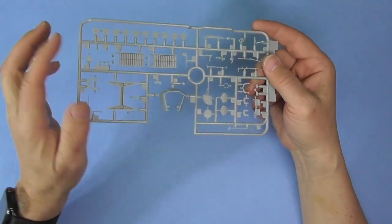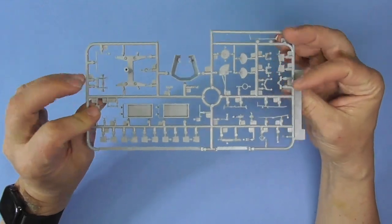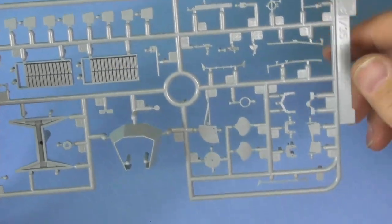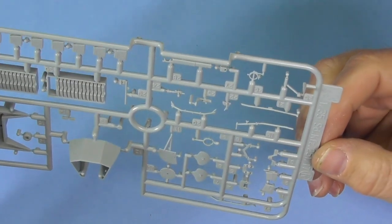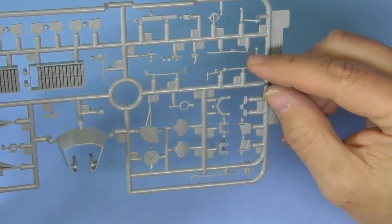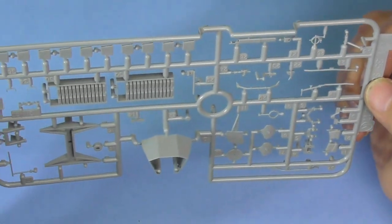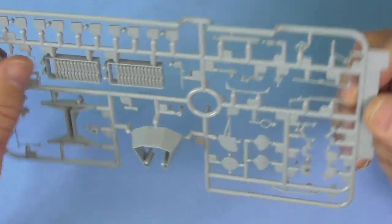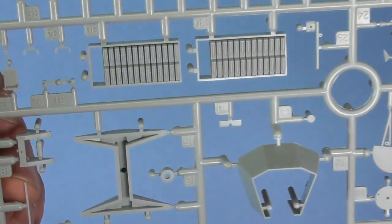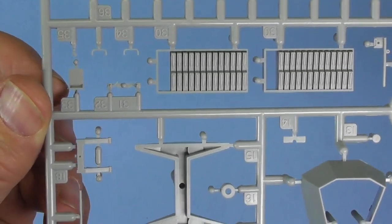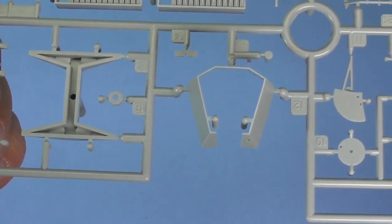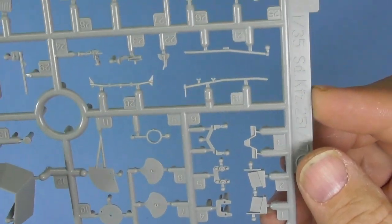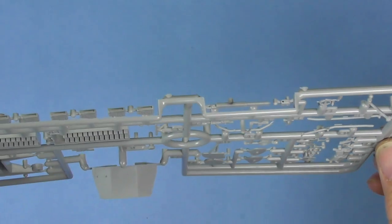So, there's the gun shield. The gun mount. That's a nice delicate looking parts. There's your side markers in plastic. Your magazines. Magazine rack. That's nicely detailed. There you go.